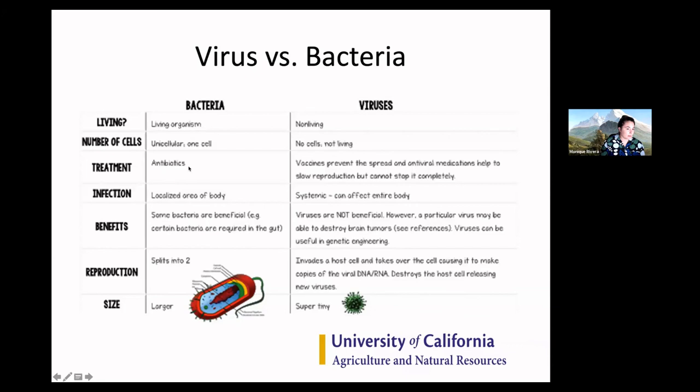In many cases, the treatment for bacteria is antibiotics, if the immune system can't handle overtaking it. Bacteria can be localized in an area of the body, but can also go systemic in humans and in plants in the case of HLB. We know that some bacteria are beneficial and required — that's also true with psyllids, which use bacteria in their guts to better digest plant material.